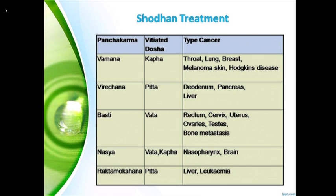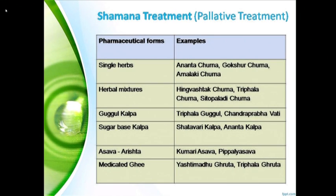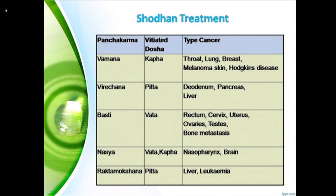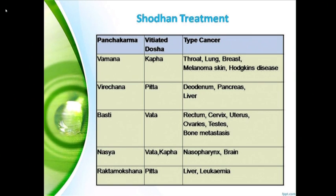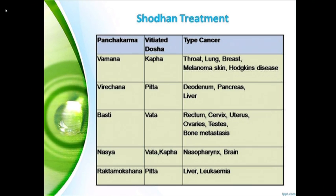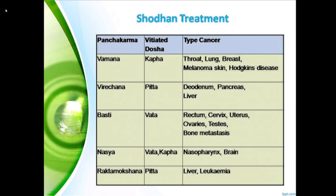Regarding treatment, we usually do shodhana — the main purification treatments. These include vamana, virechana, basti, nasya, and raktamokshan, along with single herbs. In vamana, we have seen good results in cancer of the lung and breast, and also in melanoma of the skin and Hodgkin's disease. For instance, we have a patient in Germany from the last 12 years with melanoma skin who has done panchakarma four times and also undergone vamana. The oncologist's report says: whatever treatment you are doing just now, please follow it. This is a good achievement for Ayurveda in relation to cancer. In virechana, for cancer of the duodenum, pancreas, and liver, we can use this treatment as well.